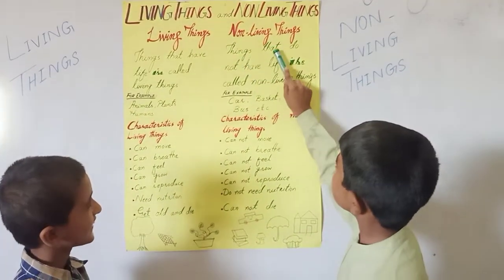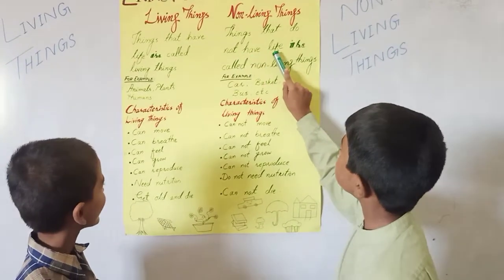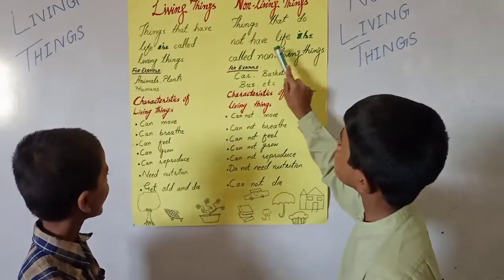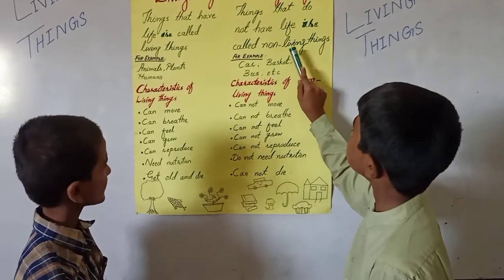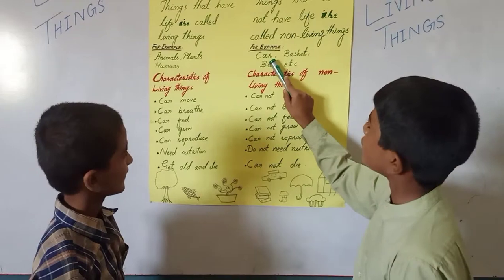Things that do not have life are called Not Living Things. For example: car and bus.